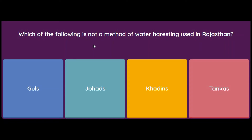Which of the following is NOT a method of water harvesting used in Rajasthan — Guls, Jhods, Khadins, or Tankas? In Rajasthan, Jhods, Khadins and Tankas are all used. However, Guls are channels found in the Western Himalayas, not in Rajasthan. So the answer is Guls.